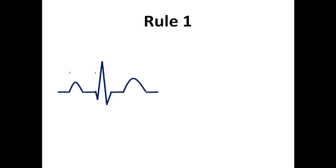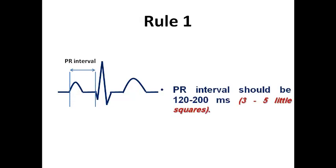Rule number one, it looks at the PR interval and it measures it. So it dictates that the PR interval should be from 120 to 200 milliseconds which is from 3 to 5 small squares. So rule number one, check the PR interval duration.